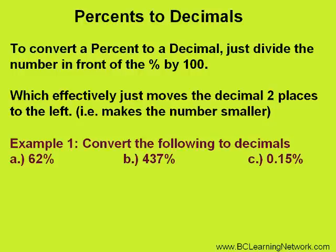Let's convert 62% to a decimal. Remember, percent means out of 100. So we take 62, divide it by 100, which effectively moves the decimal two places to the left, giving us an answer of 0.62.